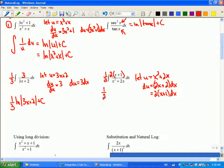So I'll have one-half the integral of 1 over u du, so that'll be one-half the natural log of u plus a constant, so one-half the natural log of x squared plus 2x plus a constant.